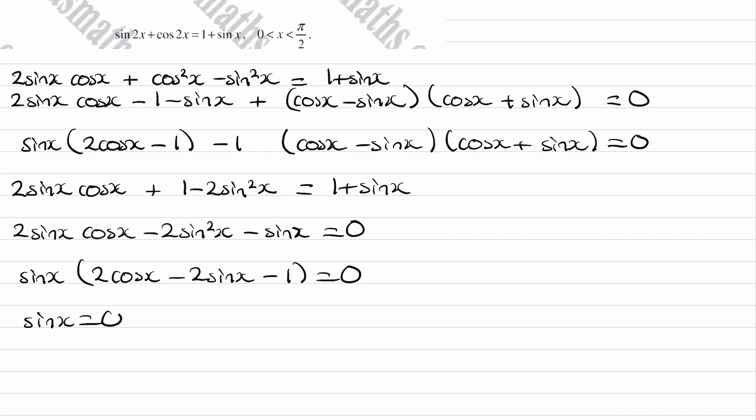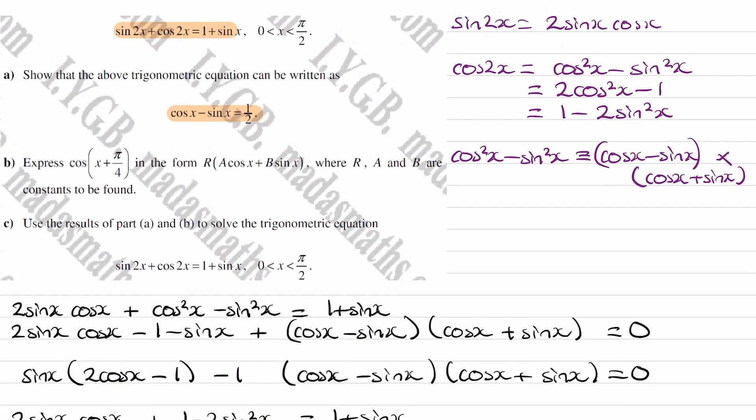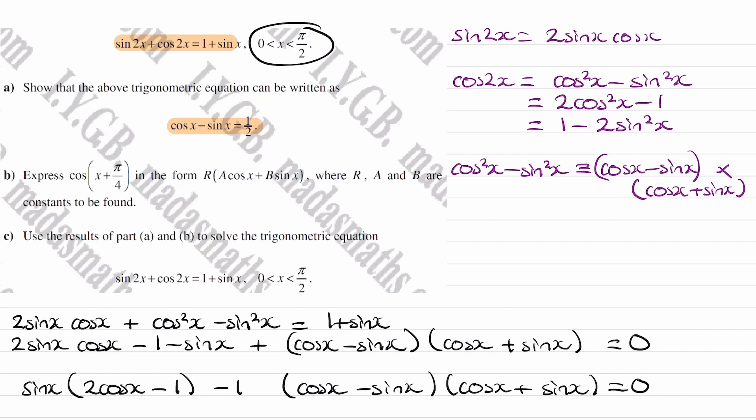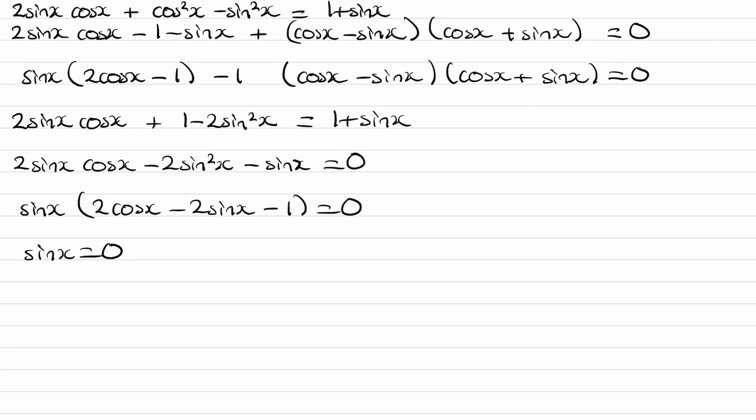So sin x equals 0 is a solution. Now our domain is 0 to π over 2. If we were to solve the equation sin x equals 0, we end up with x equals 0, π, and 2π. Think of a sin graph, think of where it crosses the x-axis. So none of those three values are in this domain. So therefore this has no solutions. We're just therefore looking at what we have here. The 2 cos x minus 2 sin x minus 1 is going to be 0.